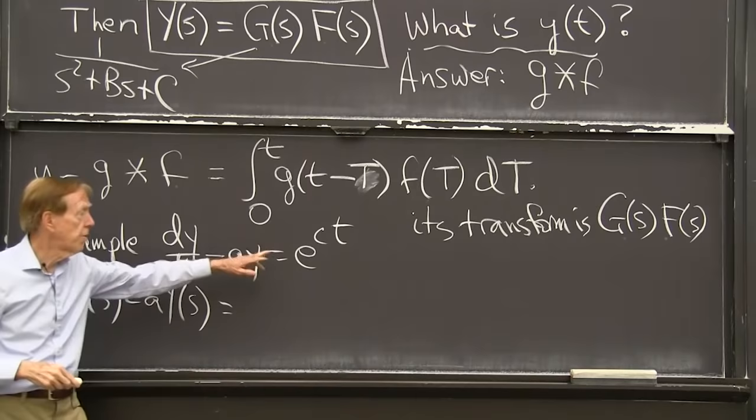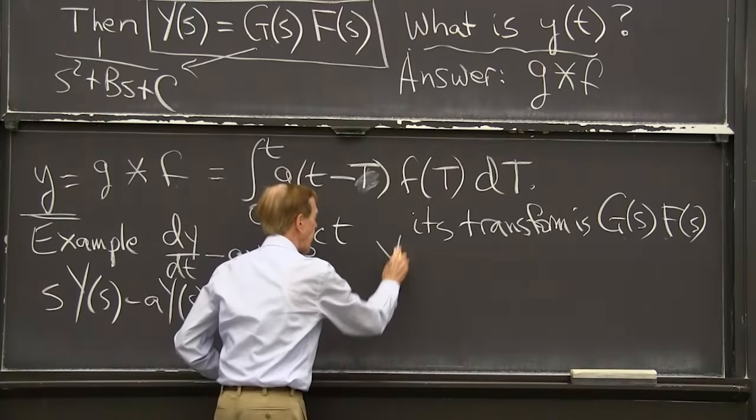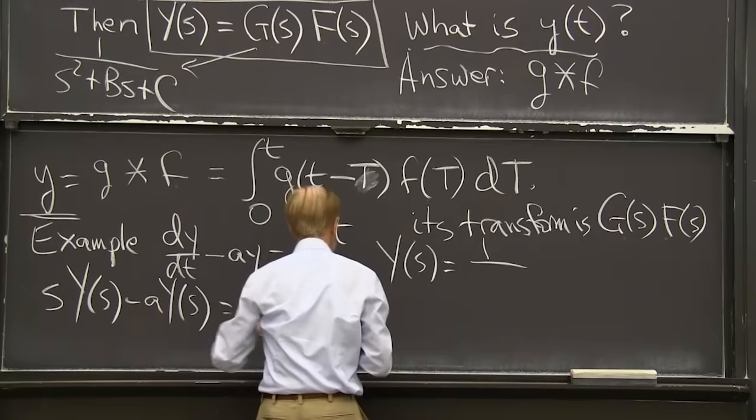Well, I know the transform f(s). I know the transform of that is 1 over s minus c. So this is just s minus a factors out. So y(s) is 1 over s minus a, right?